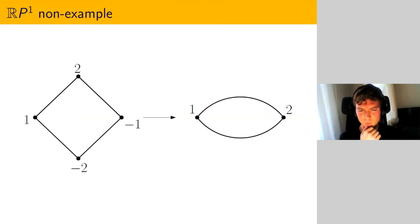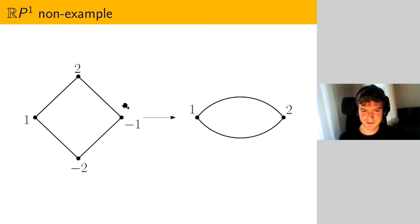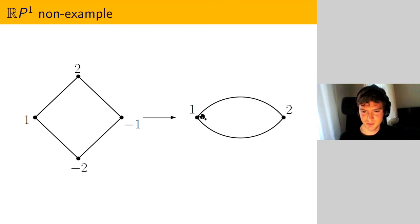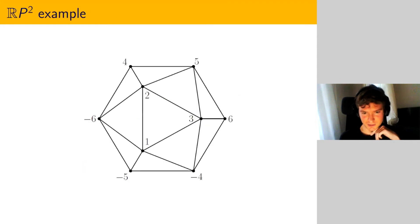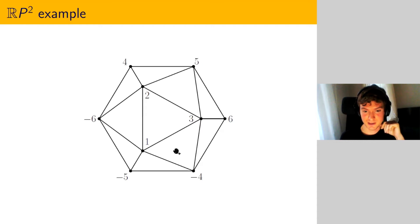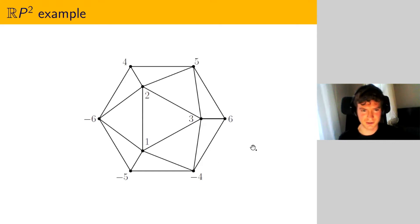Why must the distance be at least three? If instead of a hexagon you take a square, the distance between opposite vertices is two, and the quotient is no longer a triangulation — you get two different edges between the same pair of vertices. In two dimensions, the icosahedron is a symmetric triangulation of S^2 with distance three between opposite vertices, so its quotient is RP^2, giving the minimal triangulation with six vertices.